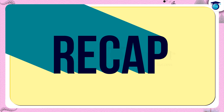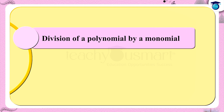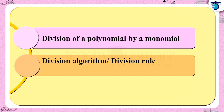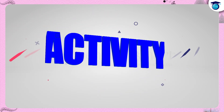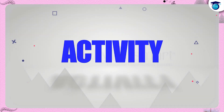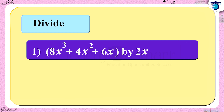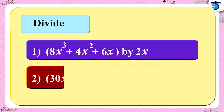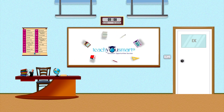Let's recall what we discussed today. We discussed the division of a polynomial by a monomial and the division algorithm: dividend = divisor × quotient + remainder. Before winding up, let's check how much you understood by doing an activity: divide 8x³ + 4x² + 6x by 2x, and divide 30x⁴ + 20x³ + 10x² + 5x by 5x. That's all for now — see you in the next class.